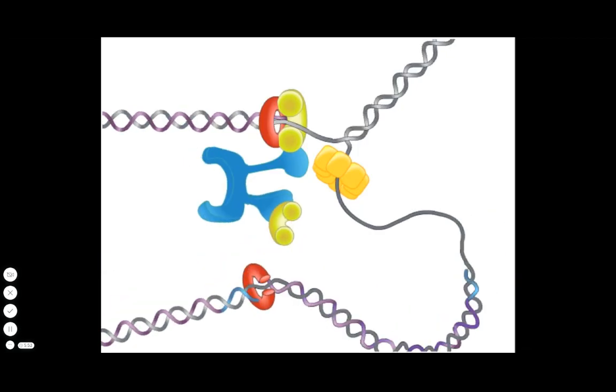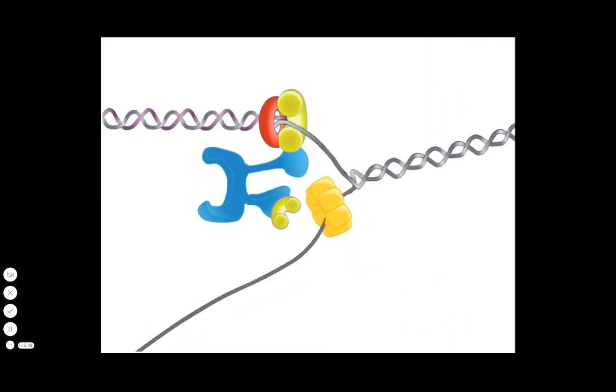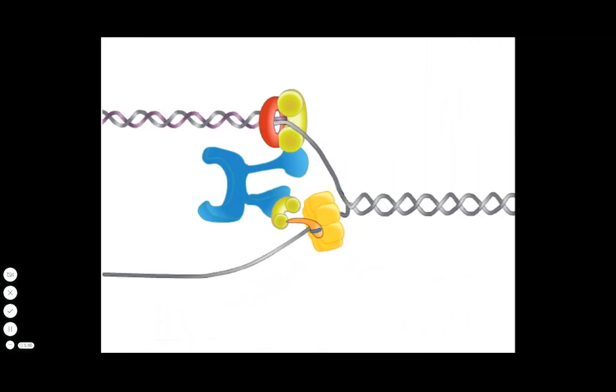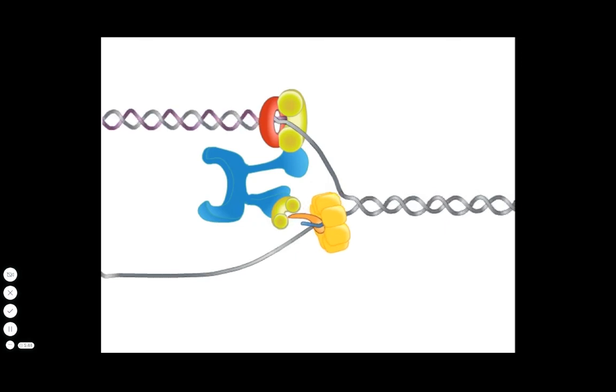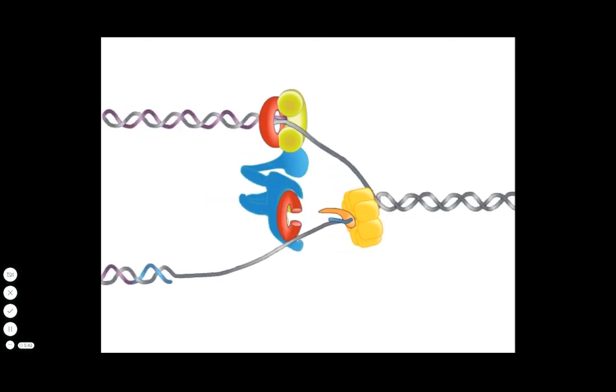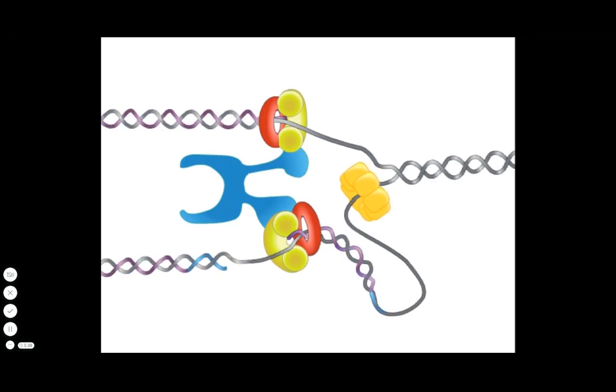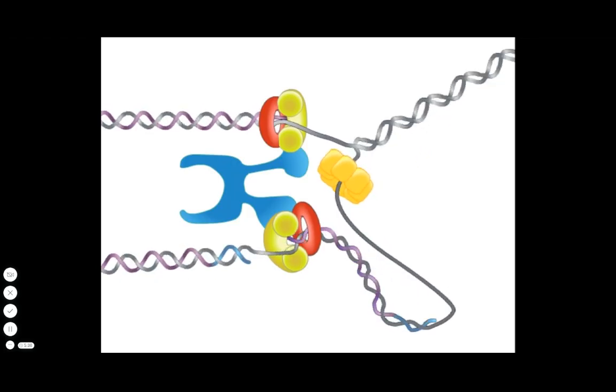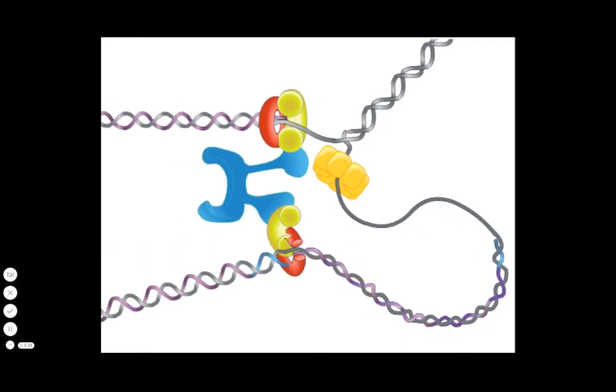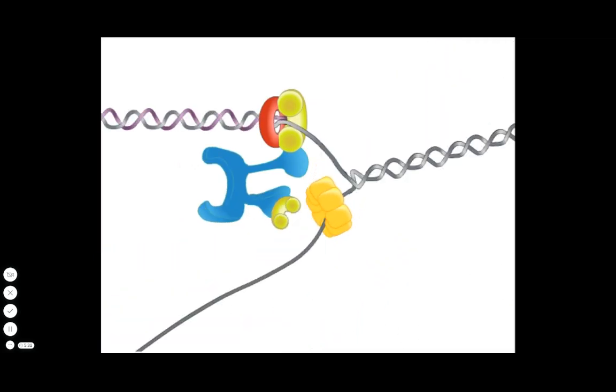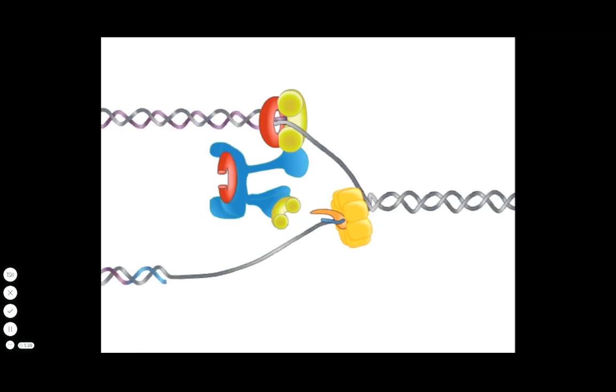After DNA helicase has moved approximately 1,000 bases, a second RNA primer is synthesized at the fork. The sliding clamp loader adds a new sliding clamp to the primer, and then adds the DNA polymerase to begin synthesis on a new Okazaki fragment. The cycle continues for the length of the template strands.